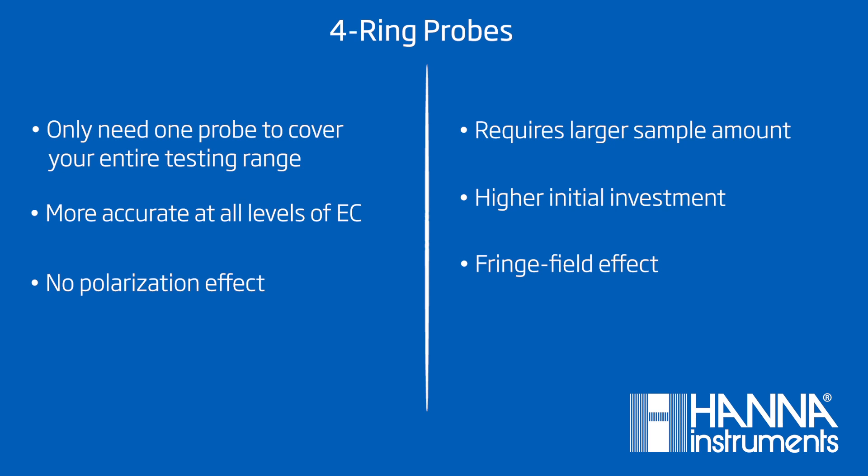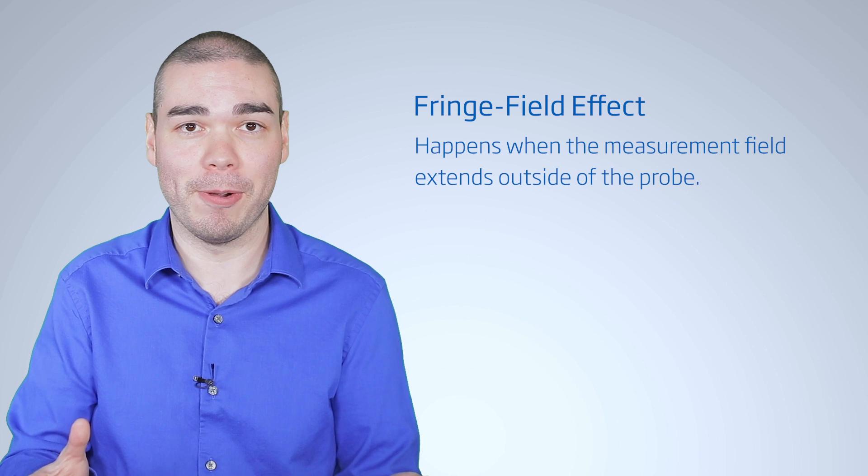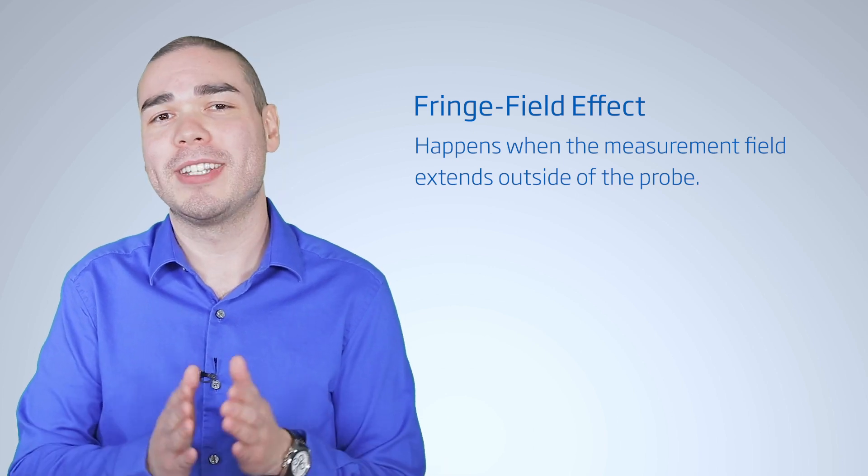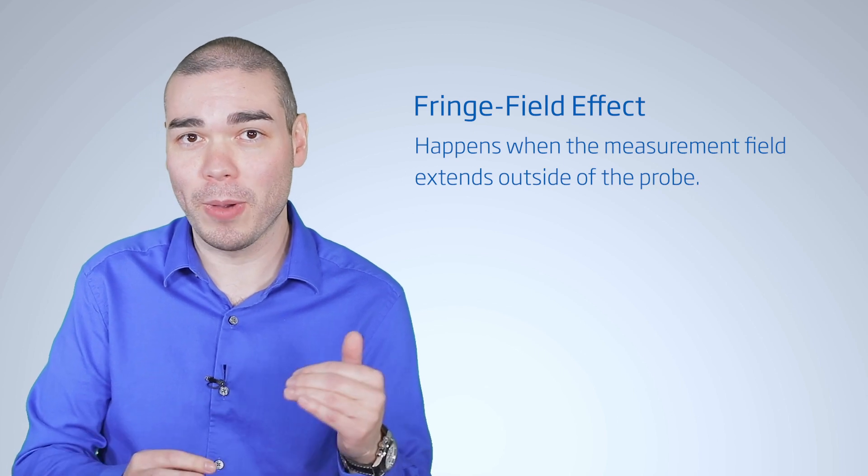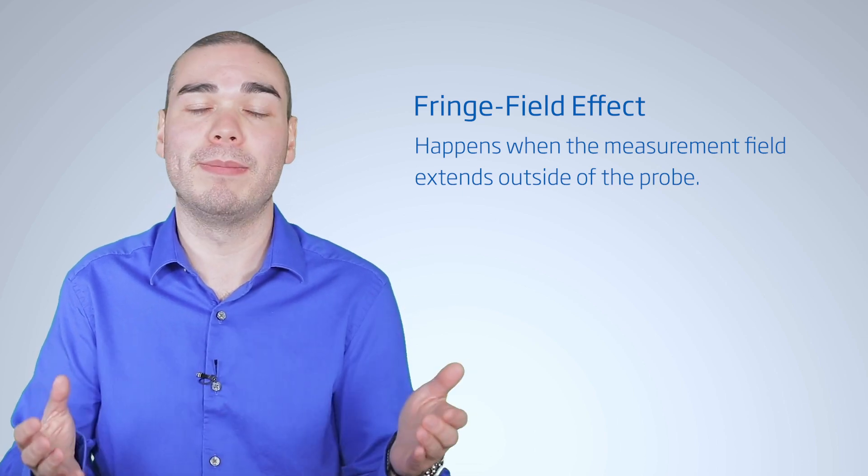For the four-ring probe, you will have to use a larger sample volume to adequately submerge the probe, and it is more of a financial investment. While you don't have to worry about the polarization effect, you do need to be wary of the fringe field effect. This happens when the measurement field, that constant current, extends outside the probe. You only need to worry about the fringe field effect if your probe is too close to the sides of the container, or pipe, where you are taking an EC measurement. A good rule of thumb is to keep the probe at least an inch away from all surfaces. The distance you need to keep the probe varies, so just check your manual.